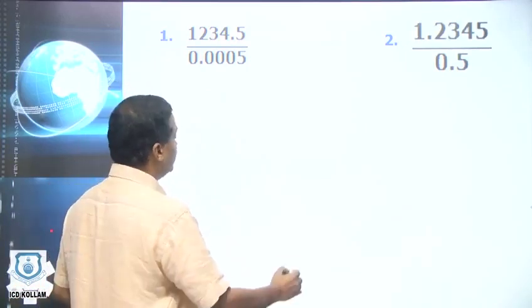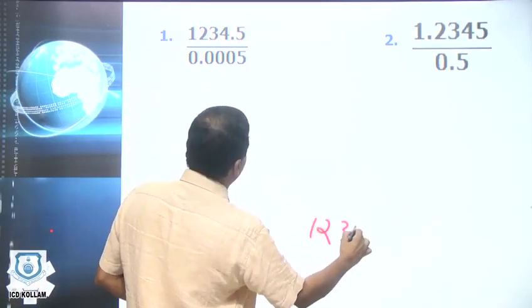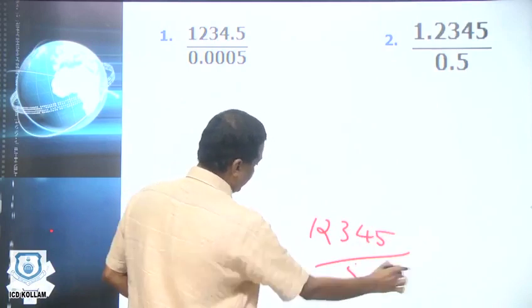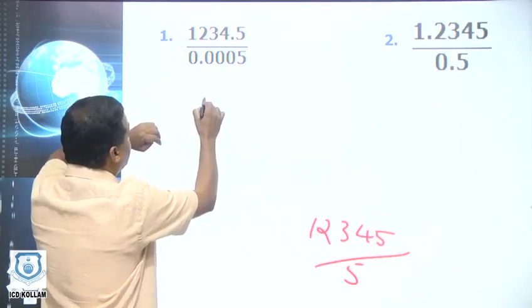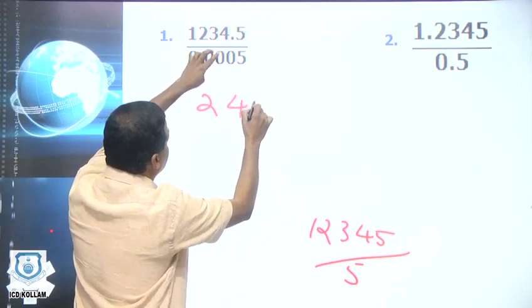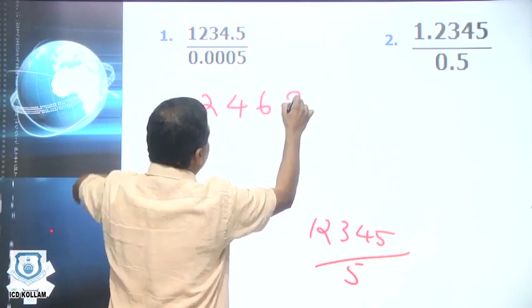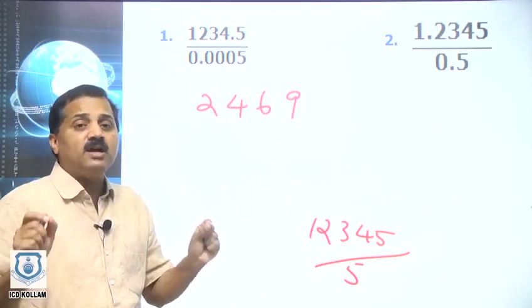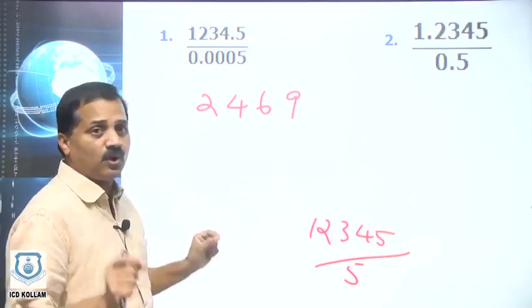So I am going to divide 12,345 by 5. In 12, 5 goes 2 times. 23, 4 times. 34, 6 times. 45, 9 times. So the fundamental answer will be 2469.